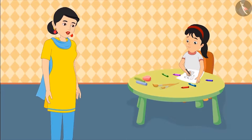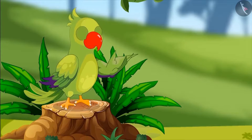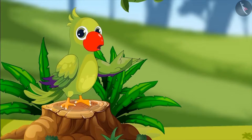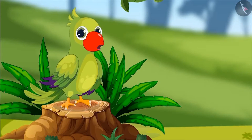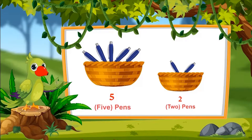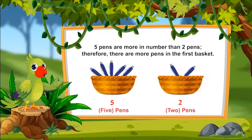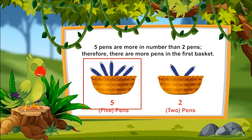Now quickly wash your hands and come — let me serve you food. So children, in this example you saw how Pinky compared the number of different animals. Can you also compare the number of things near you, like Pinky? Which basket has more pens — the first basket containing five pens or the second containing two pens? Absolutely correct. Five pens are more in number than two pens. Therefore, the first basket has more pens.